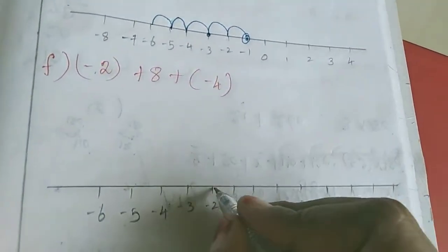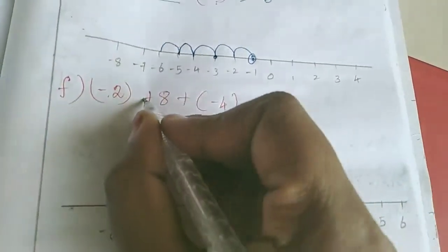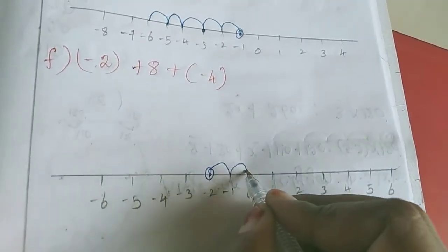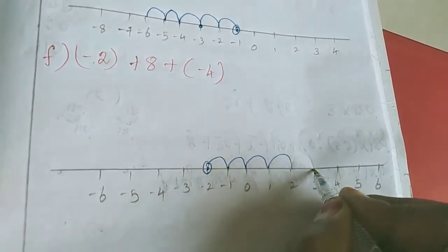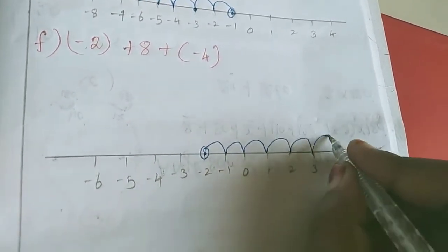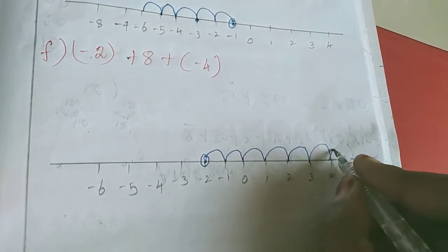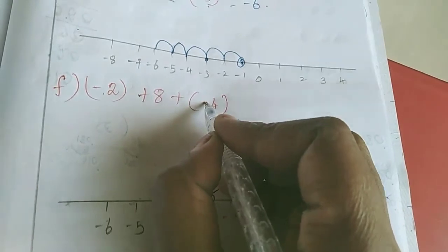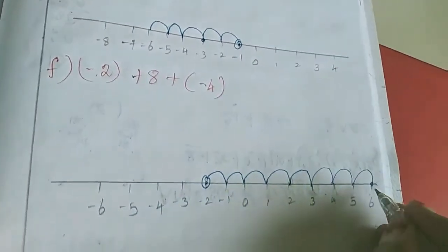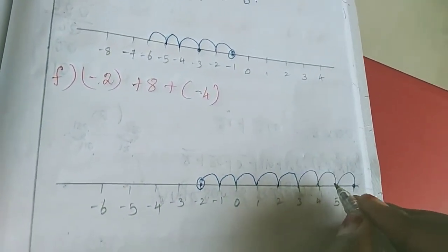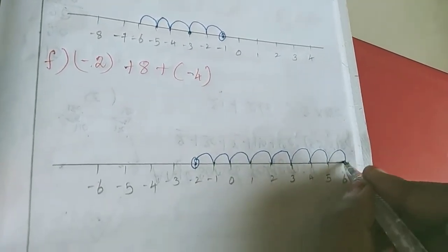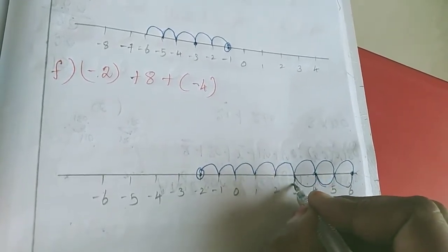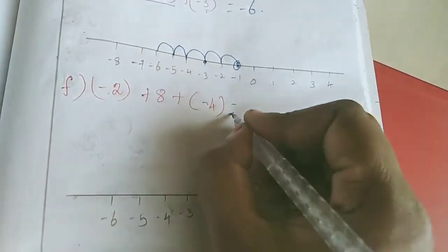Sum F: starting at minus 2 — marked here. Plus 8, so we move to the right side 8 steps: 1, 2, 3, 4, 5, 6, 7, 8. Next is minus 4, so we move to the left side 4 steps: 1, 2, 3, 4. The answer is 2.